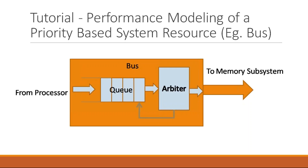I'm going to model the transactions coming from the processor, or requests from the processor, which are going to be placed on a queue in your bus. I'm going to consider a very simple arbiter as well, and then compute what is the delay associated with this particular bus arbitration scheme. We're going to consider a very simple scenario to get started with.